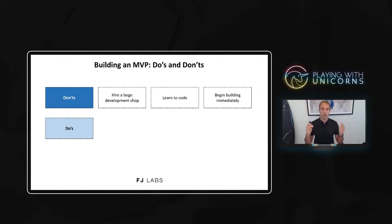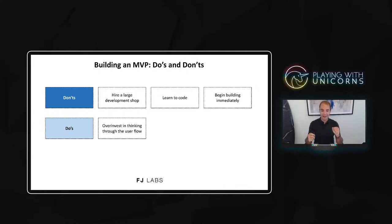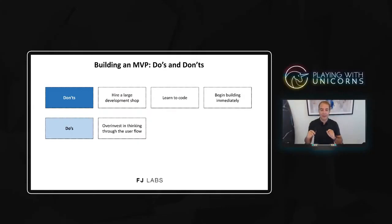Last, and probably most importantly: don't start building immediately. Once you have an idea, you feel you need to get going right away. But if you do that, you're going to forget a lot of the flows and not think of all the scenarios. Instead, spend a lot more time thinking through the user flow — exactly what will a user do every step of the way, from signing up to recovering the password. Really design the flow, and every single button or action on every page needs to be thought through. If you do that, you'll save a lot of time, and you'll have specifications that are much easier to use when you get it developed.